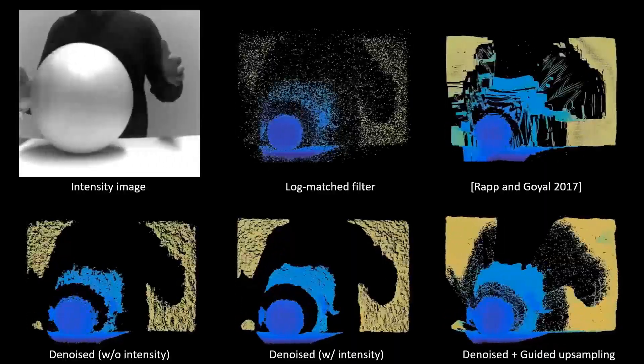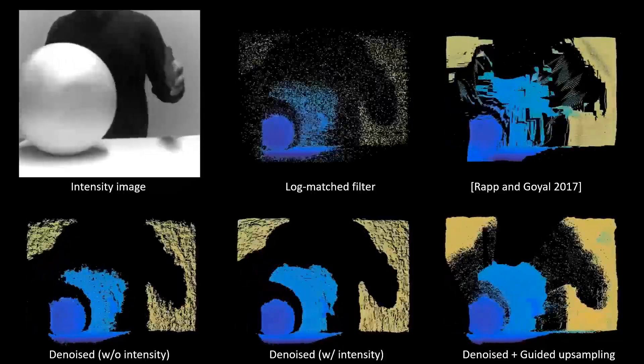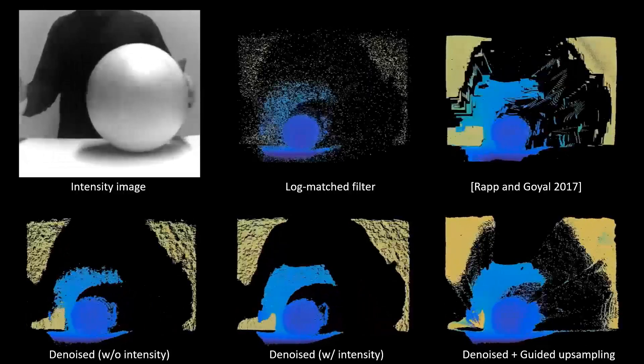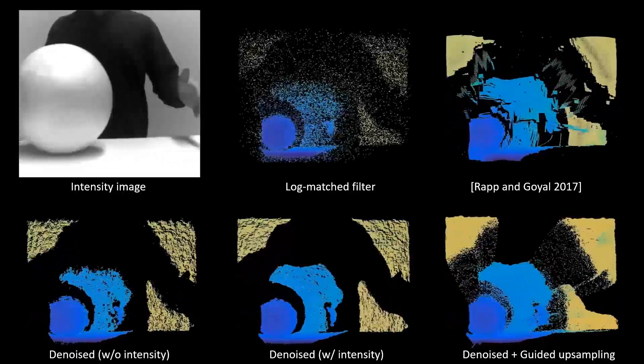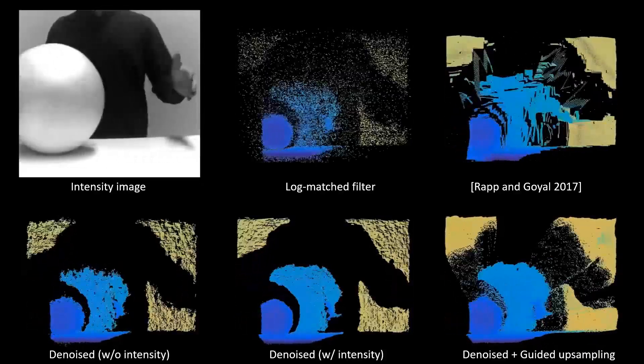Our reconstruction results show superior performance over both conventional log-matched filtering and Rapp and Goyal's method. Our depth estimates with and without the intensity image produce high-quality reconstruction results. Guided upsampling further improves the density of the reconstructed point cloud at the cost of introducing floating depth values near depth discontinuities.